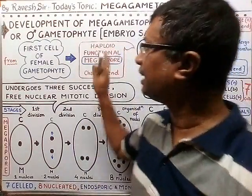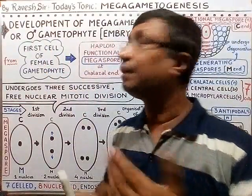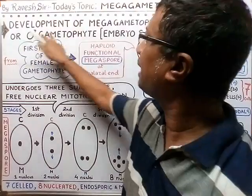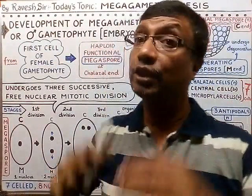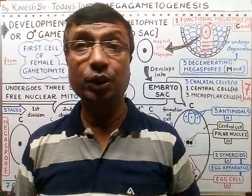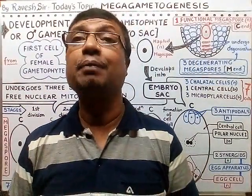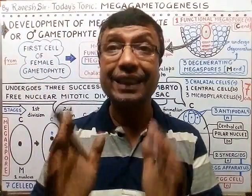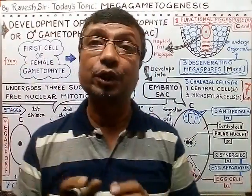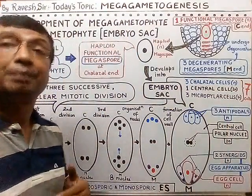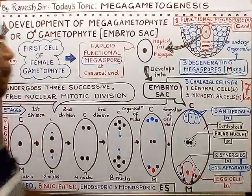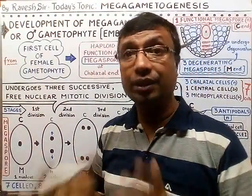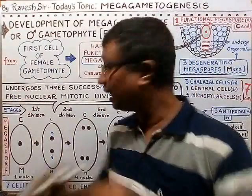The haploid functional megaspore is important because it is considered the first cell in the development of the female gametophyte — that is, the embryo sac. The terms mega gametophyte, female gametophyte, and embryo sac all refer to the same structure. The embryo sac can be compared to the structure in animals where the baby develops. The megaspore was formed by meiosis, that is why it is haploid, and its further development is very unique.